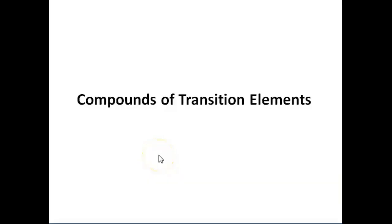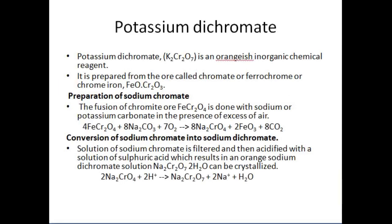Compounds of transition elements. Here we are going to discuss about different compounds of transition elements. The first one is potassium dichromate.